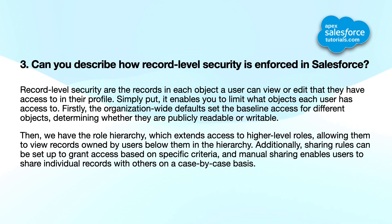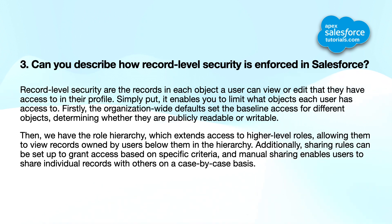Then we have the role hierarchy, which extends access to higher-level roles, allowing them to view records owned by users below them in the hierarchy. Additionally, sharing rules can be set up to grant access based on specific criteria, and manual sharing enables users to share individual records with others on a case-by-case basis.